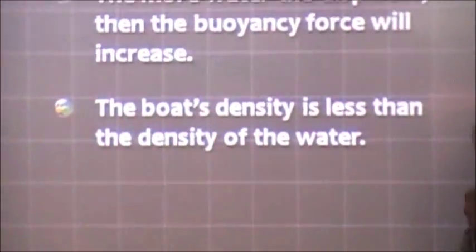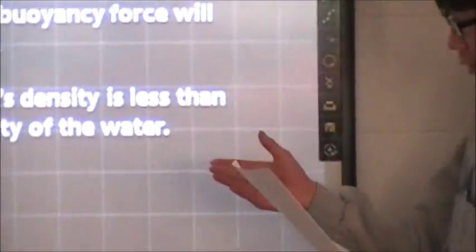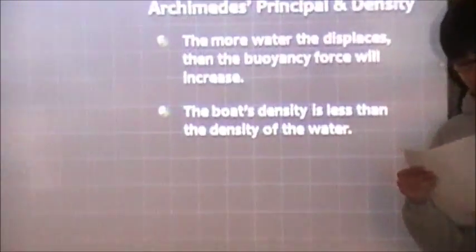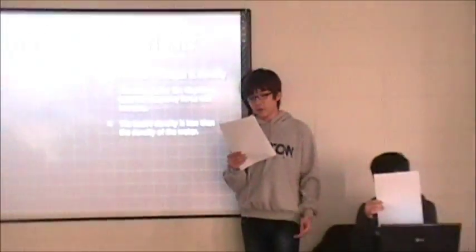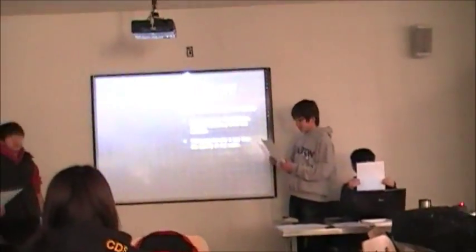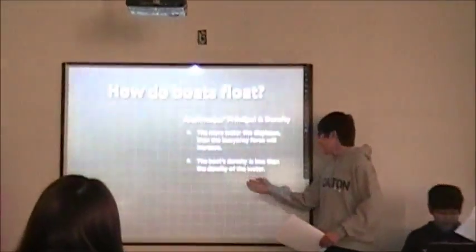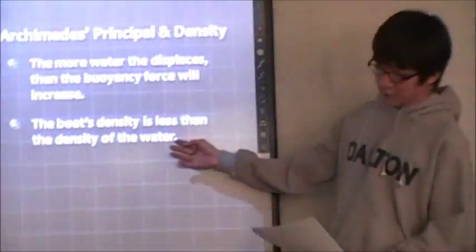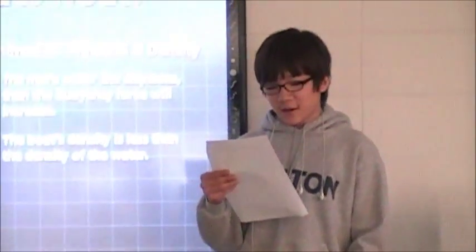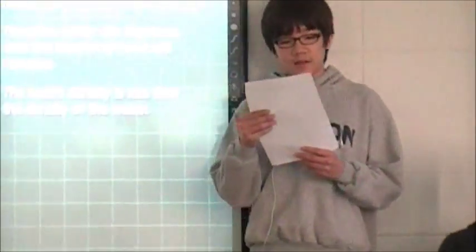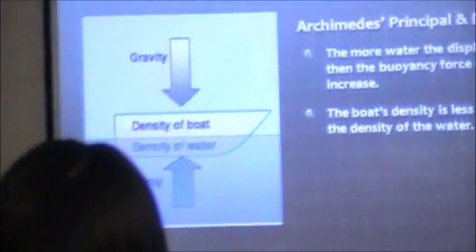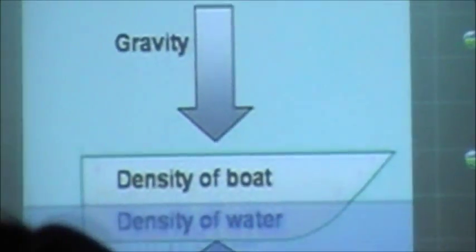As the boat displaces water, then the buoyancy force will push both of the water to make the boat float on the water. In addition, the boat's density is less than the density of the water. The boat is made out of steel, but the wide surface area and the empty space inside the water makes the boat's density less than the water's density.